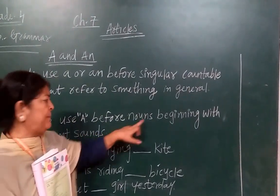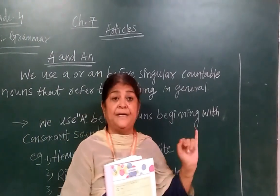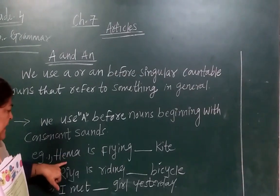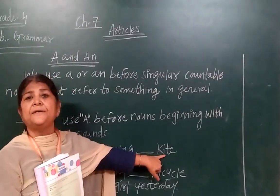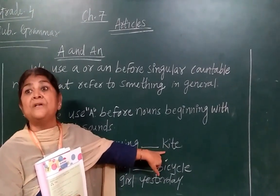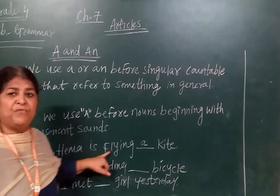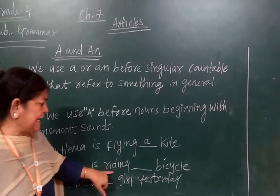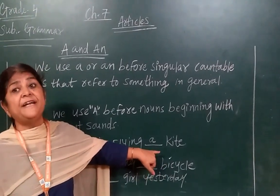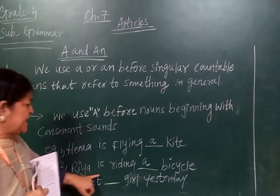We use A before a noun beginning with a consonant sound. For example: Hema is flying a kite. Kite is a noun, and the first letter K is a consonant, so we write A — a kite. Number two: Rhea is riding a bicycle. Bicycle is also a noun, and its first letter B is a consonant, so we write A — a bicycle.